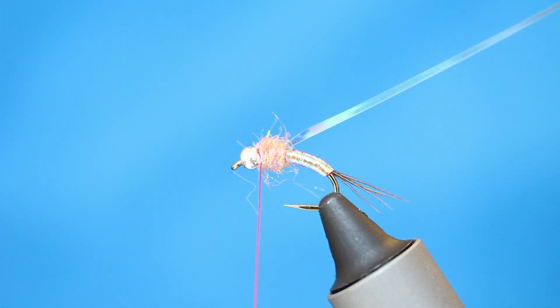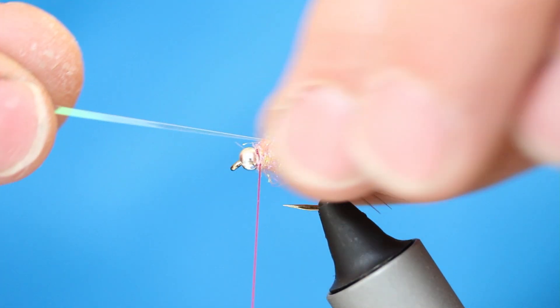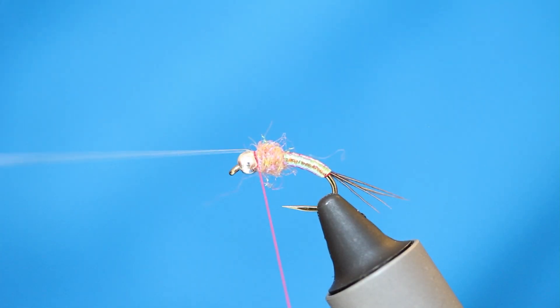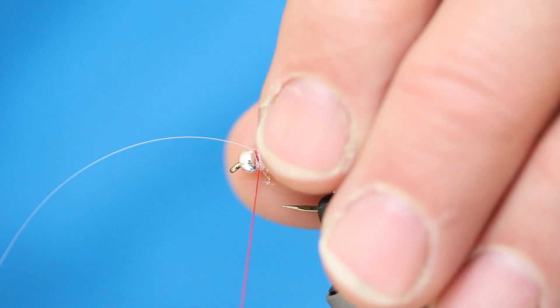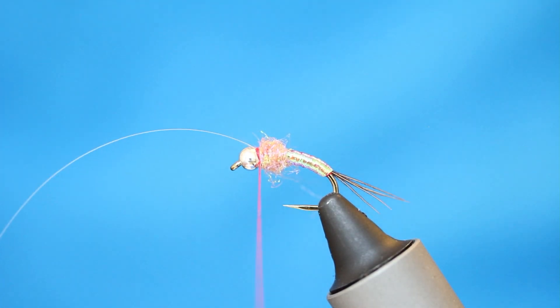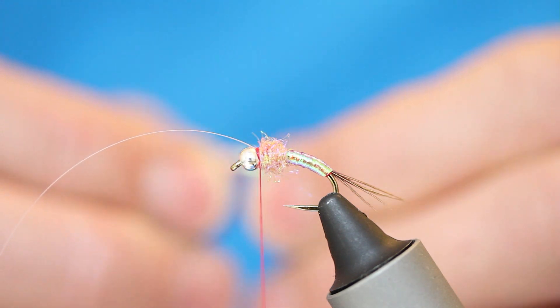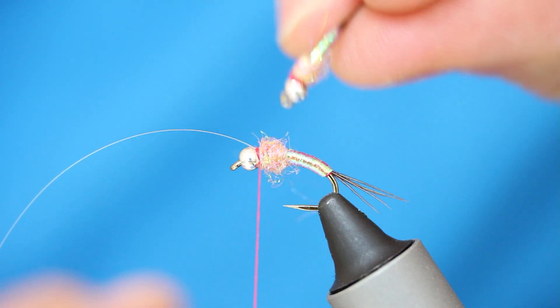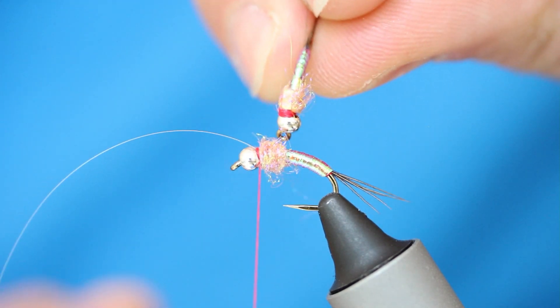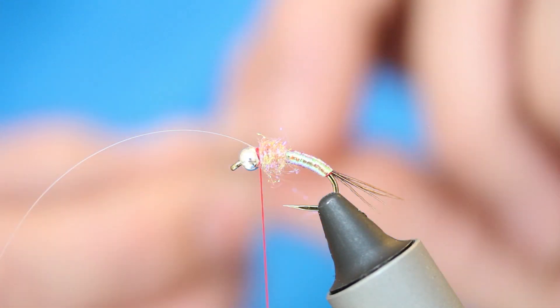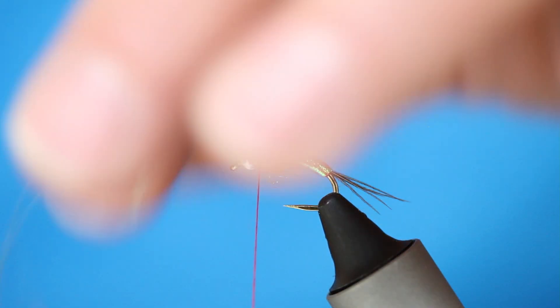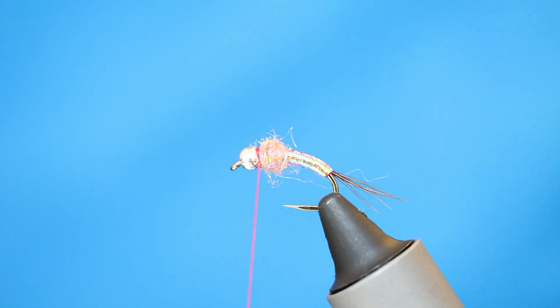I'm now just going to take my mylar up. Straight up and over the back. Creating that thorax cover. A couple of turns of the floss. And you'll see on this fly how it sits. So, you can see that the thorax cover sits flush straight over the dubbing there on the thorax area. Coming in. Snip that mylar away. And then just a few quick finishing turns.